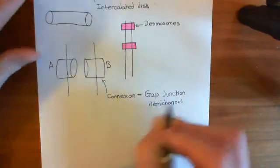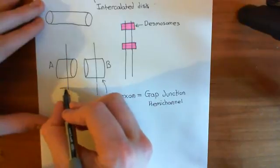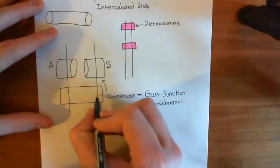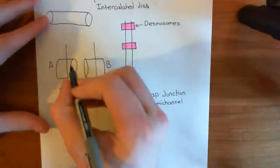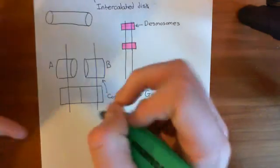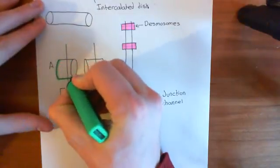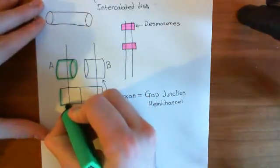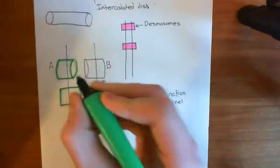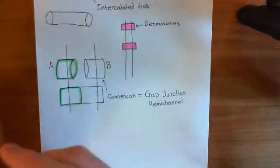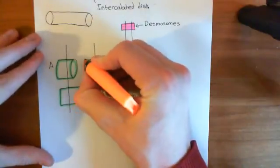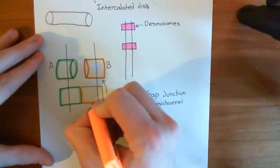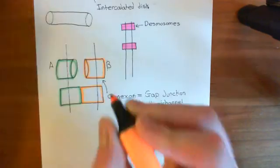When the two join together, you've got these two connexons, or these two gap junction hemi-channels, joined together now. Let me make this crystal clear - let's colour in the connexon from cardiomyocyte A in green, joined together with the connexon from cardiomyocyte B in orange. The two of them have joined together here to make what is now called a gap junction.